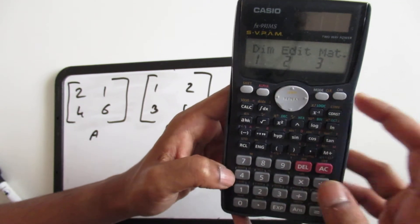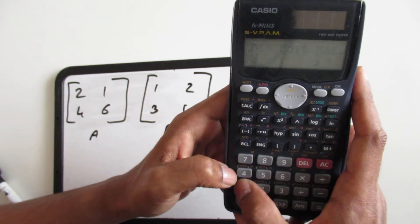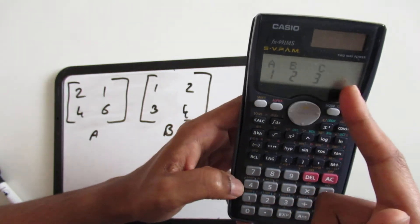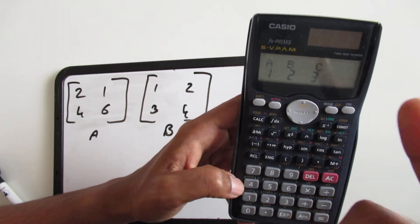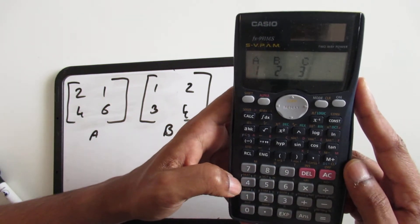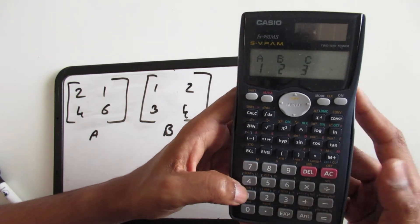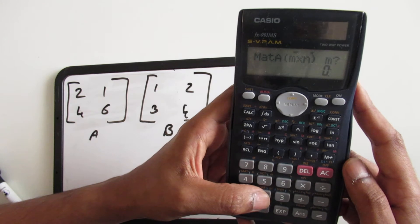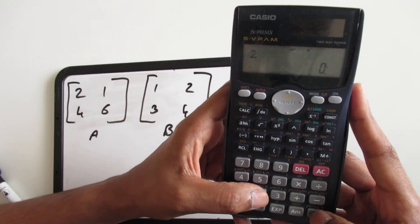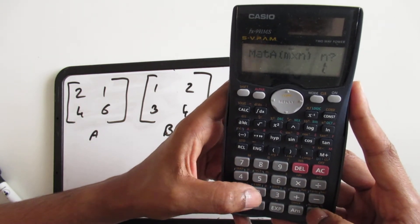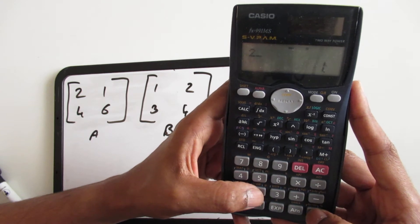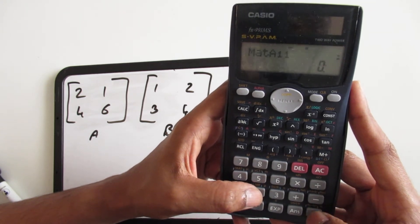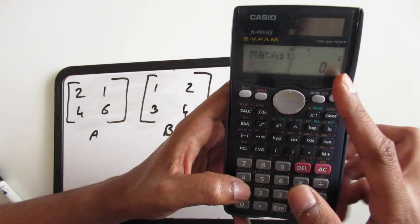Then you get dimension, edit the matrix, or choose the matrix itself. So we go to dimension and ABC are the three matrix registries it can hold. We're going to choose matrix A for this one and it's going to be a 2 by 2, so we're going to enter 2.